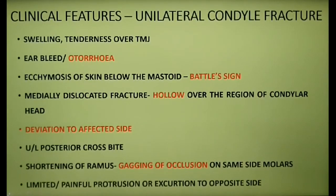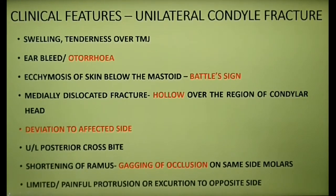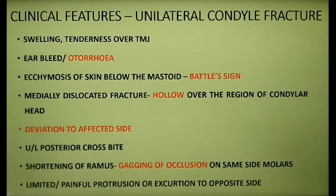Let's see the clinical features associated with unilateral condyle fracture. There is often swelling and tenderness over the TMJ area of the affected side. There is hemorrhage from the ear on the same side, which results from laceration of the anterior wall of the external auditory meatus. It is important to distinguish bleeding originating in the external auditory canal from middle ear hemorrhage — the latter indicates a fracture of the petrous temporal bone and may be accompanied by cerebrospinal otorrhea, meaning escape of cerebrospinal fluid through the ear.